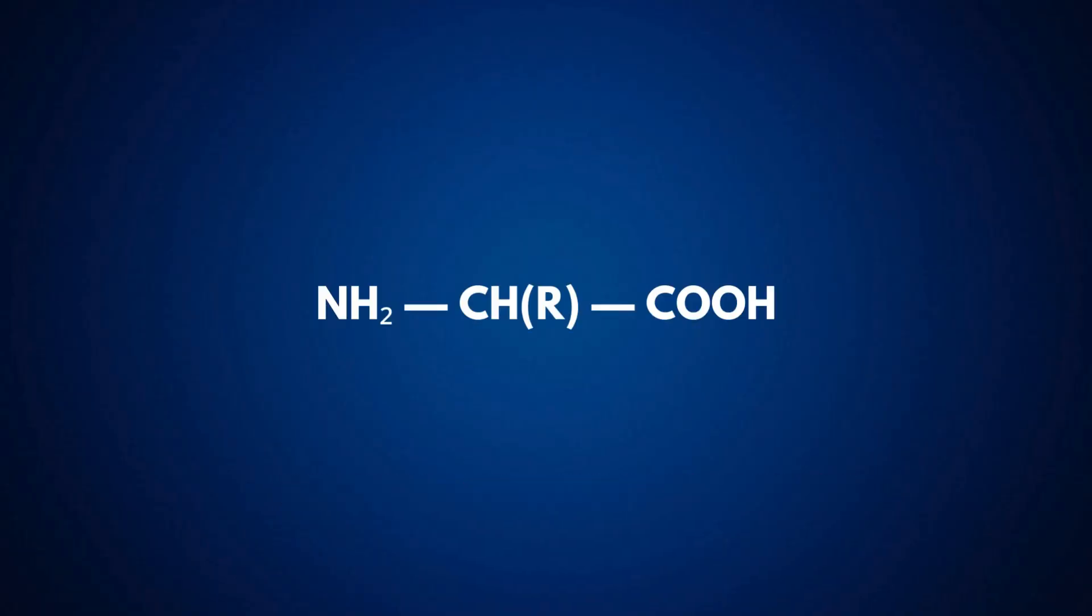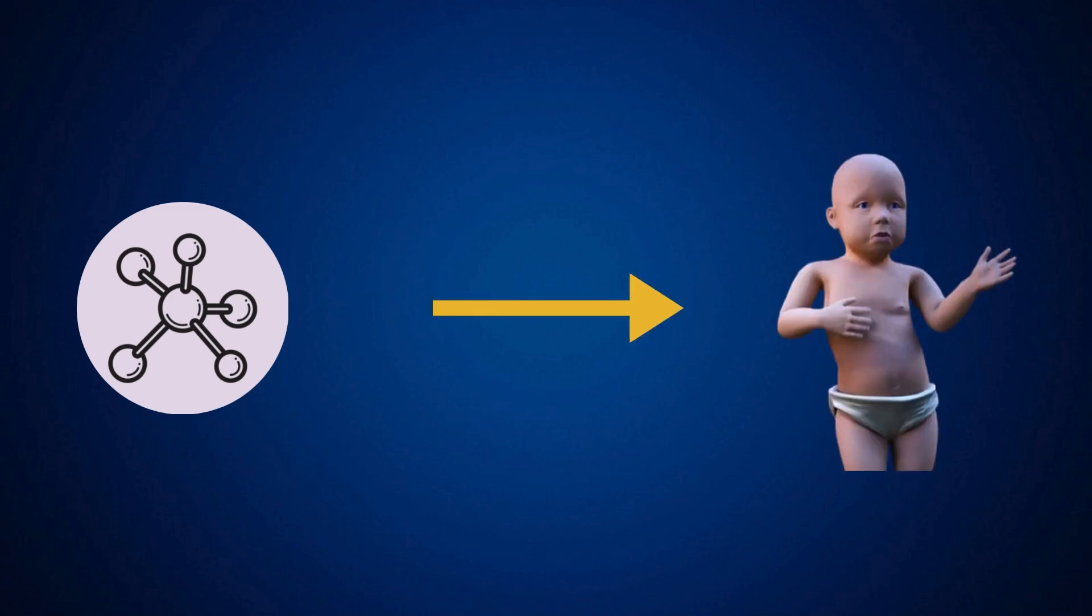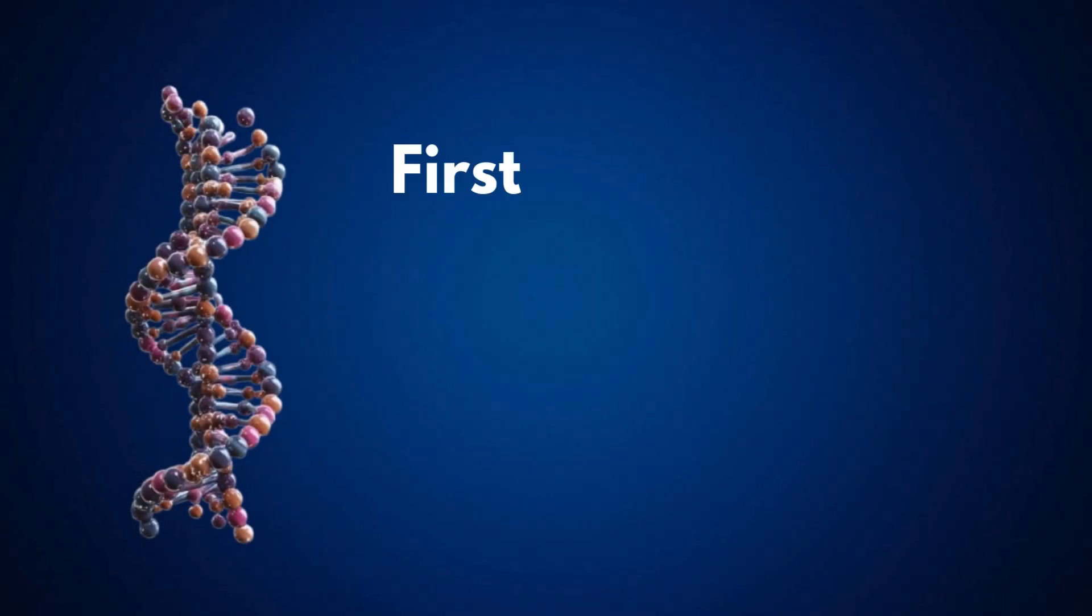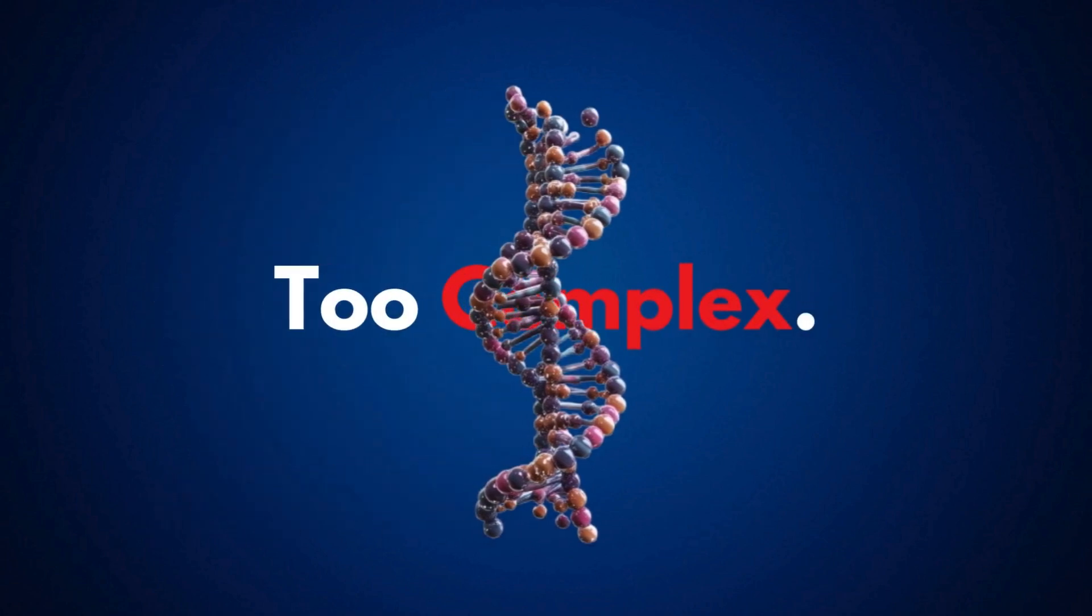But having amino acids isn't enough. To go from molecules to life, we needed something capable of self-replication. For decades, scientists assumed DNA must have been the first hereditary molecule, but there was a problem. DNA is too complex to form spontaneously.